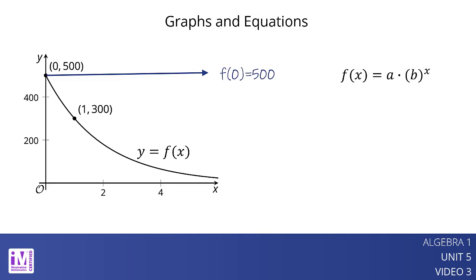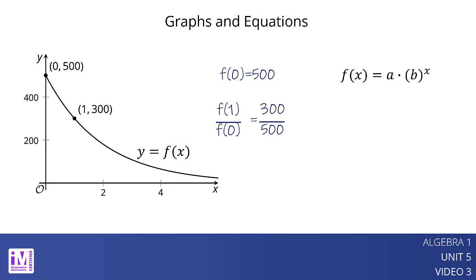The value of b is the growth factor. To find the growth factor for f, we can calculate f of 1 divided by f of 0, which is 300 divided by 500, or 3 fifths. So an equation that defines f is f of x equals 500 times 3 fifths to the x.